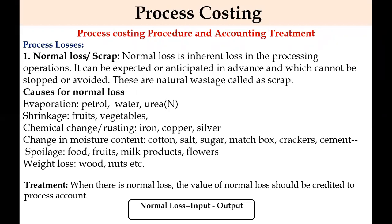Other causes of normal loss include spoilage of food, milk products, and flowers, as well as weight loss — for example, wood kept in sunlight loses weight over time, as do nuts. These are natural wastages that cannot be avoided. The treatment for normal loss is that its value is credited to the process account. The formula is: Normal Loss = Input minus Actual Output.